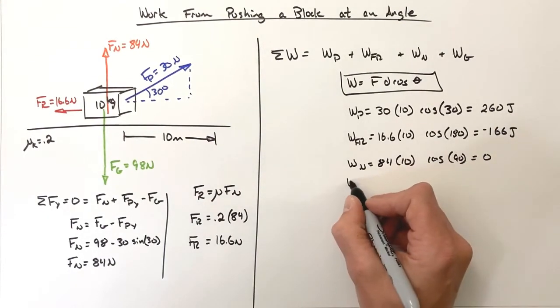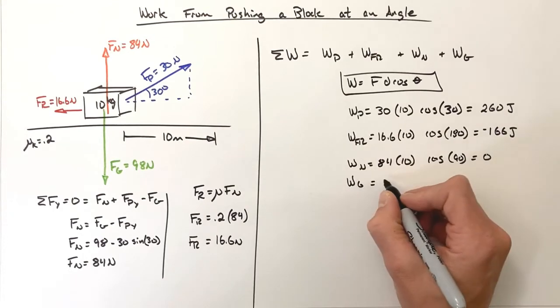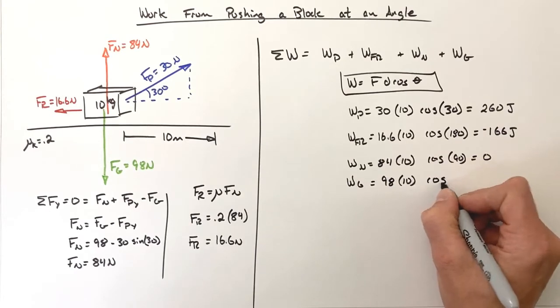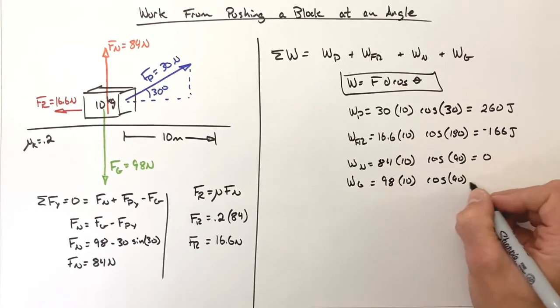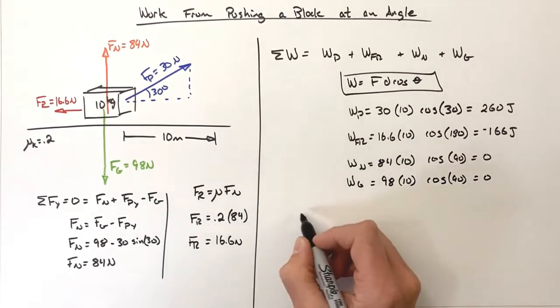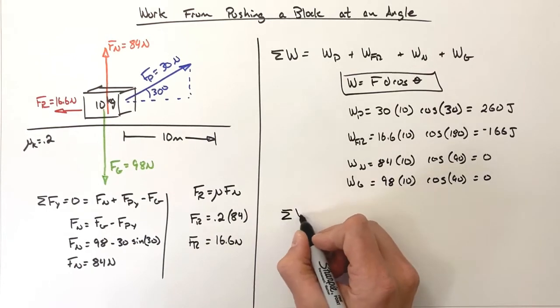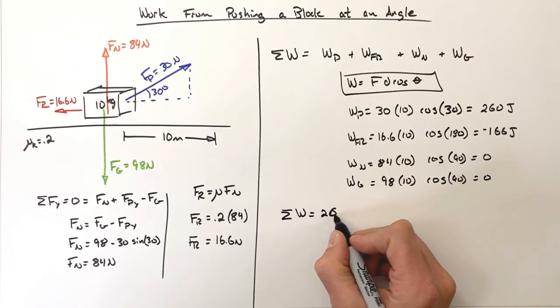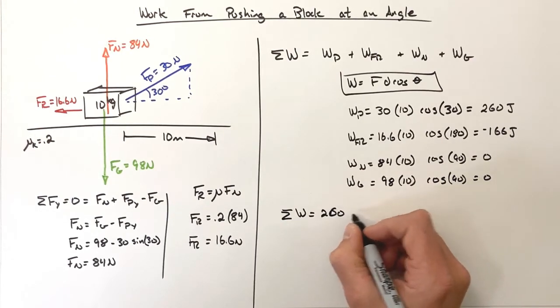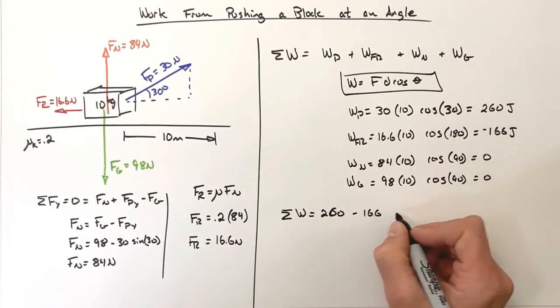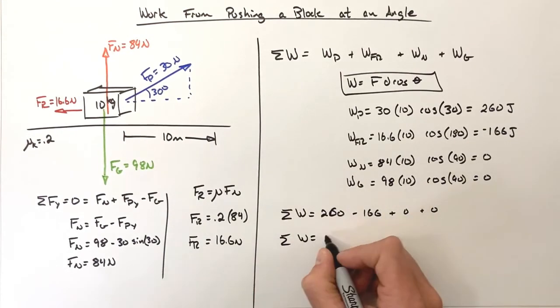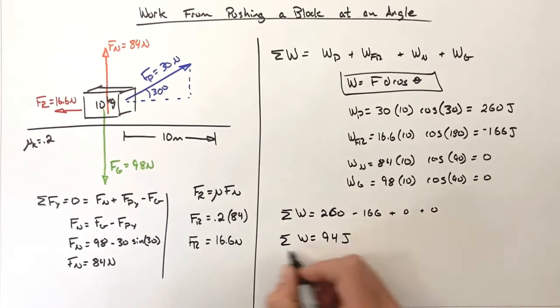We see a similar issue with gravity: 98 times displacement of 10 and cosine of 90, which is zero. So the total work, or the sum of all works done on the block, is equal to 260 minus 166 plus zero plus zero. The sum of all works done on the block is 94 joules.